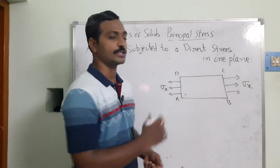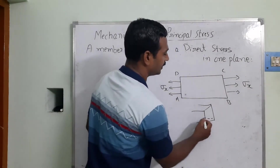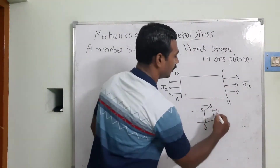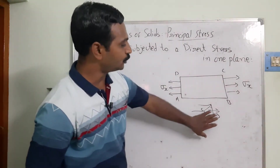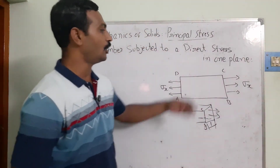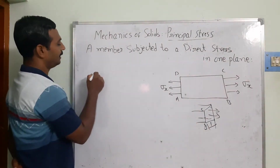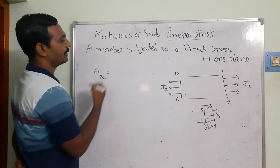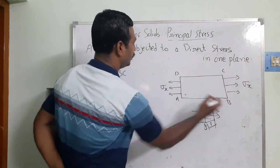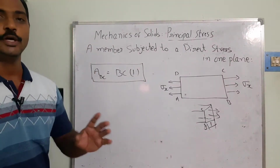Now I want to find out the cross-sectional area. Looking at the three-dimensional object, the face BC is visible. The loads are coming over there, and considering unit thickness, the cross-sectional area of the normal surface BC is equal to BC multiplied by unit thickness — so the area equals BC into 1.